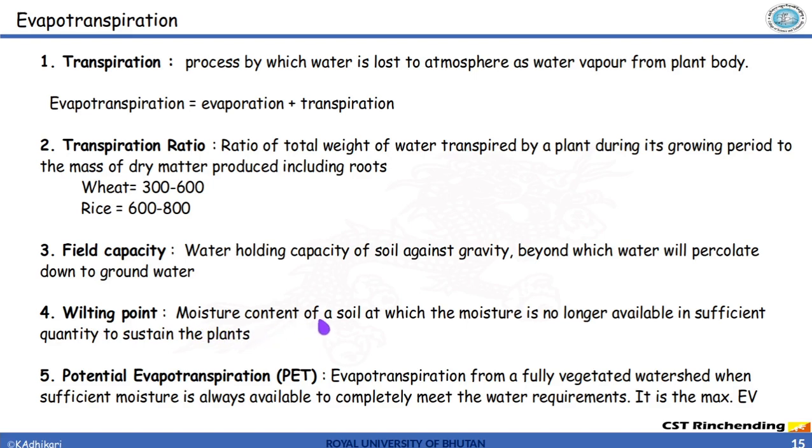It is important because if the water drains easily then the water is not available for the plant. Next term is the wilting point. Moisture content of a soil at which the moisture is no longer available in sufficient quantity to sustain plants.